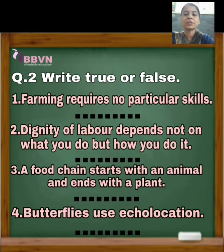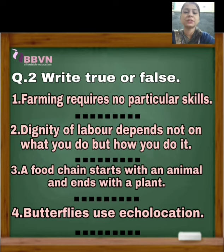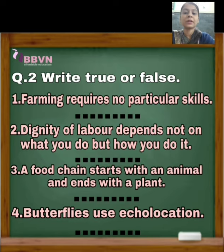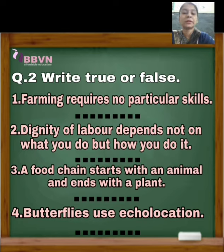Number 1: Farming requires no particular skills. जो farming होती है, खेती करना होता है, उसके लिए किसी particular skills की जरूरत नहीं होती, किसी special education की जरूरत नहीं होती. Number 2: Dignity of labor depends not on what you do, but how you do it. Dignity of labor इस पर depend नहीं करता कि आप क्या करते हो, बल्कि इस पर depend करता है कि आप काम को कैसे करते हो. So is it true or false?